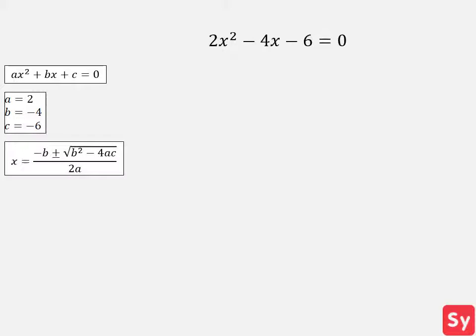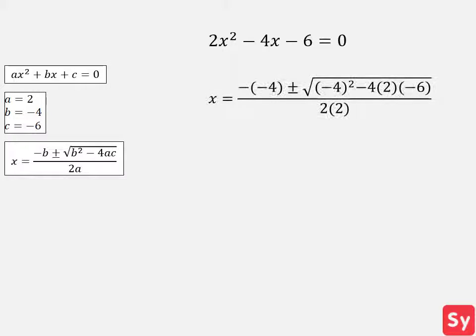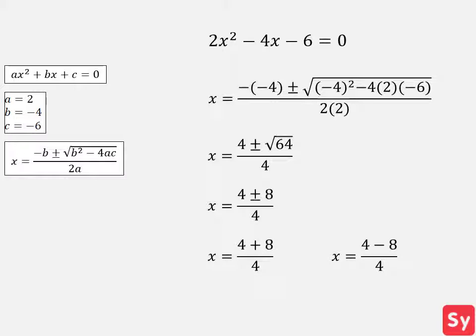Now let's look at the quadratic formula. Since we know what a, b, and c are, we can plug these values into the formula to find out the value of x. This simplifies to x equals 4 plus or minus the square root of 64 over 4. We simplify even more to get x equals 4 plus or minus 8 over 4. Now we split this into two equations and simplify to get x equals 3 and x equals negative 1 — our answer.